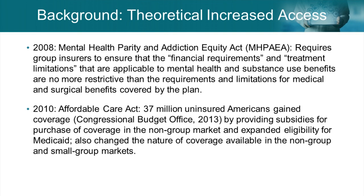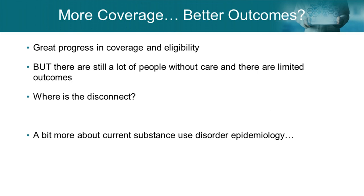The ACA allowed a lot of people to gain access to mental health care and changed the nature of coverage in non-group and small group markets. So in theory, over the last 10 to 11 years, we've had an increase in the ability to cover substance use disorder and mental health treatments. But that's in theory, because just because we can potentially cover it doesn't mean everyone's going to get the treatment that needs to happen. We still see overdose epidemics and poor outcomes — so where's the disconnect?